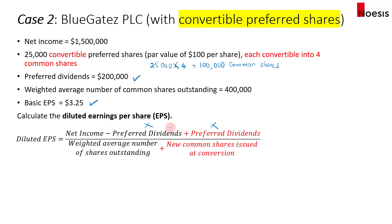In your workings, you can choose to just leave preferred dividends as zero because the subtraction and addition will net out, leaving you with just net income in the numerator. In the denominator, besides the weighted average number of shares outstanding, we also add the new common shares issued at the conversion of the preferred shares.